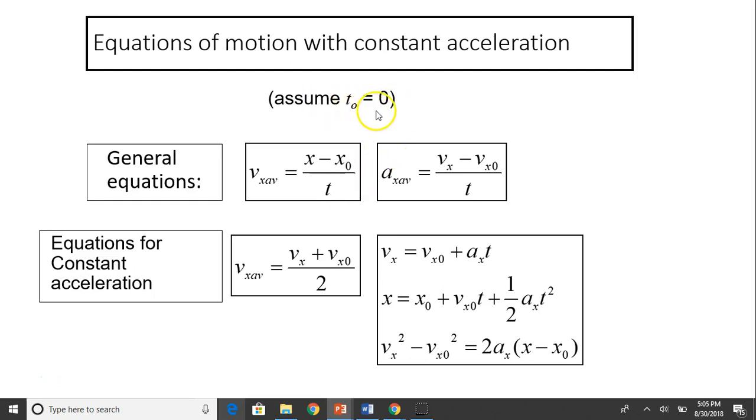This is because we assume t0 equals 0. We also know when acceleration is constant, average velocity equals the final plus initial divided by 2. When we combine these three equations together, we can derive three new equations. You need to remember the four equations on the bottom of this slide; they are only good for constant accelerated motion.